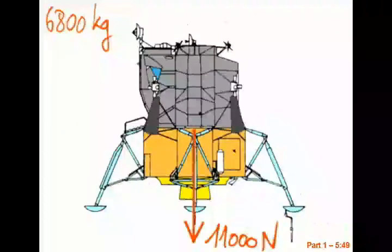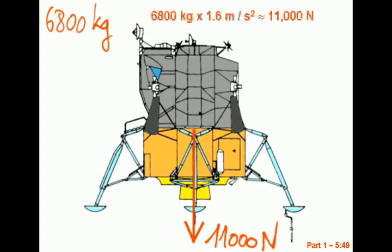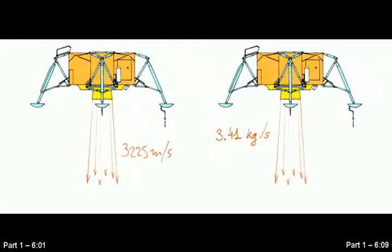Finally, more than halfway through the video, we get to the math. Gilliam shows that the lunar module would have a mass of 6,800 kilograms after using up 95% of its fuel. He converts that to 11 kilonewtons — a.k.a. 2,500 pounds of force — using the moon's acceleration of gravity. Then he jumps to this mess. He says that to counter the 11 kilonewton pull of the moon requires that 3.41 kilograms per second of combustion products have to be expelled from the nozzle at 3,225 meters per second. Where did he get that?